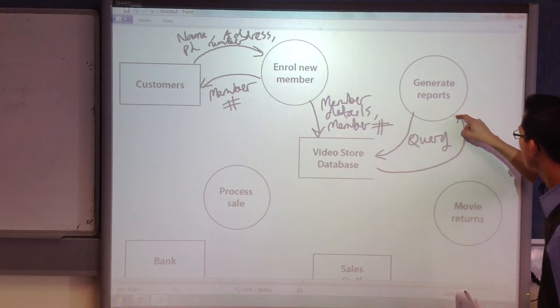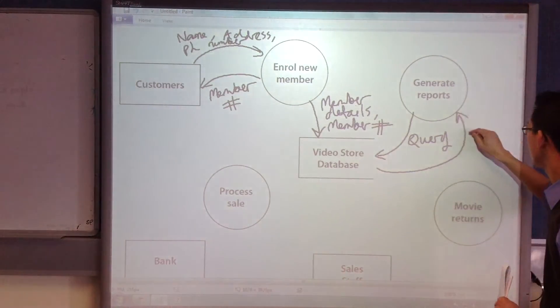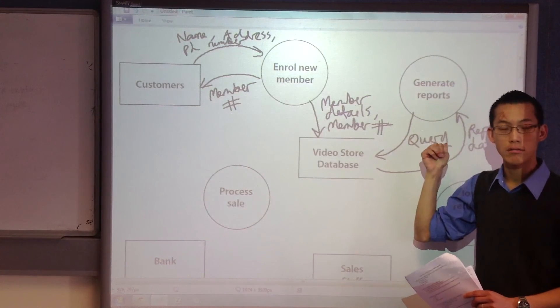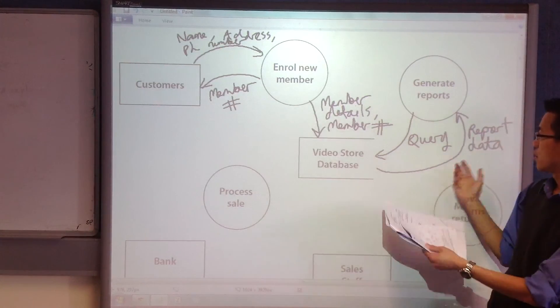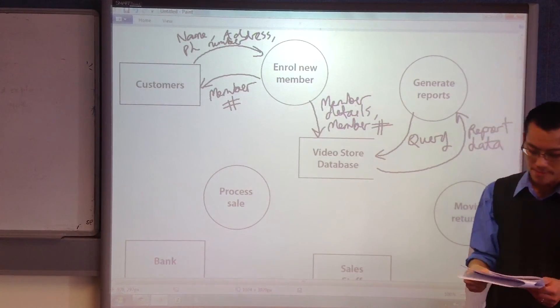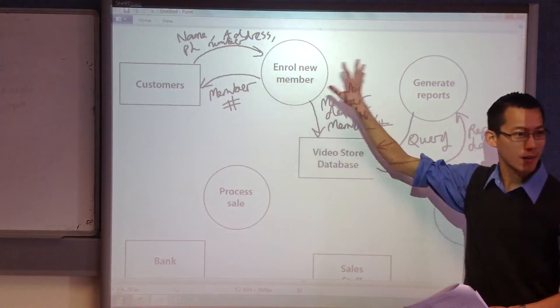What gets returned, you can say report data or records. Either of that would be fine. It's a bit difficult to be more specific than that because it depends on what kind of report the owner wants. So, I think you sort of have to be intentionally vague there. Right, we're doing pretty well. We've sort of got two processes covered.